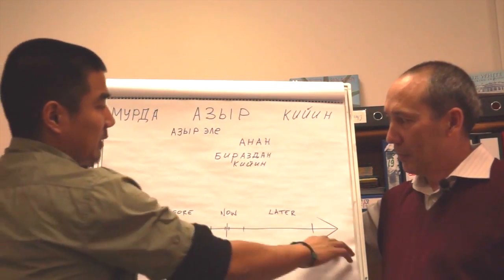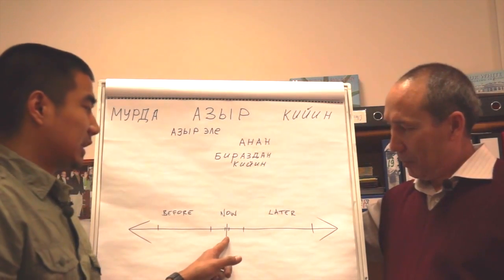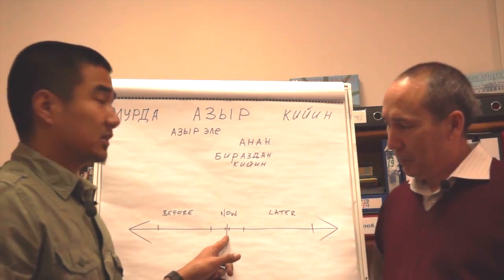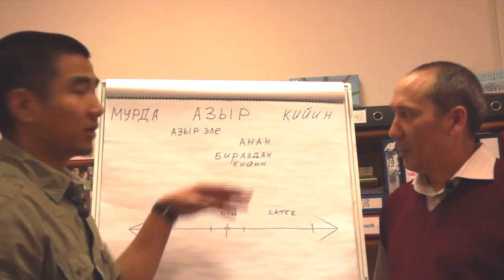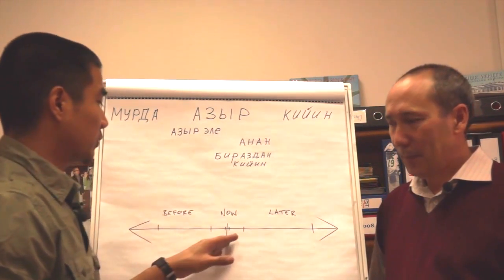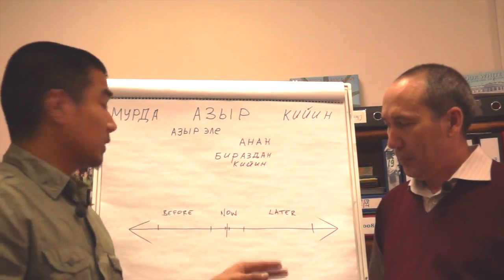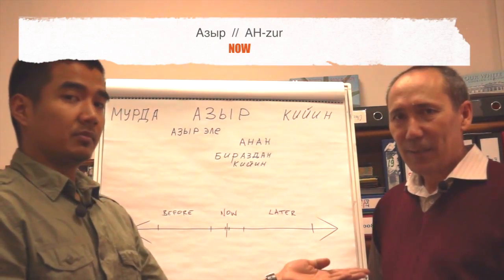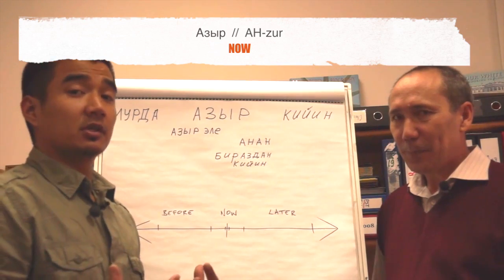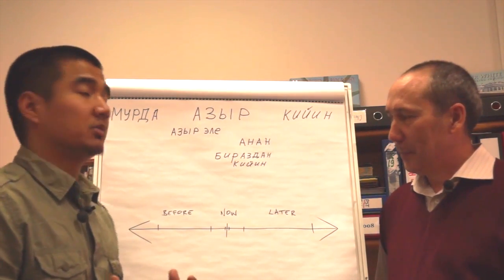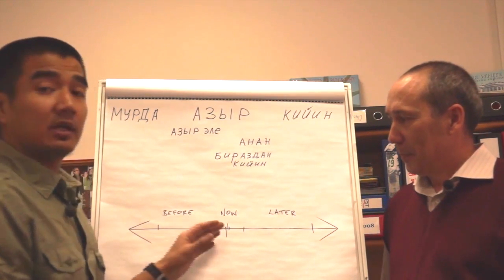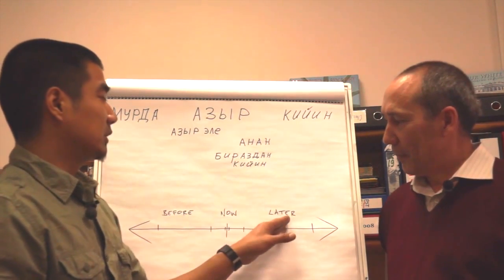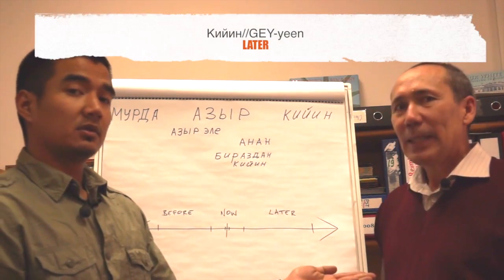So here we have our timeline, and we'll use this hash mark as this immediate moment. There are words swirling around this moment that we'll go over. But first is the word "now," which in Kyrgyz is "Hazır." Next is the word "later," which is "Keen."